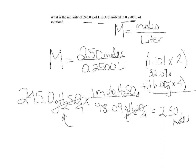2.50 divided by 0.2500 gives us a molarity of 10. So our solution is 10 molar. So we have 10 molar H2SO4. That is how you calculate the molarity of a solution.